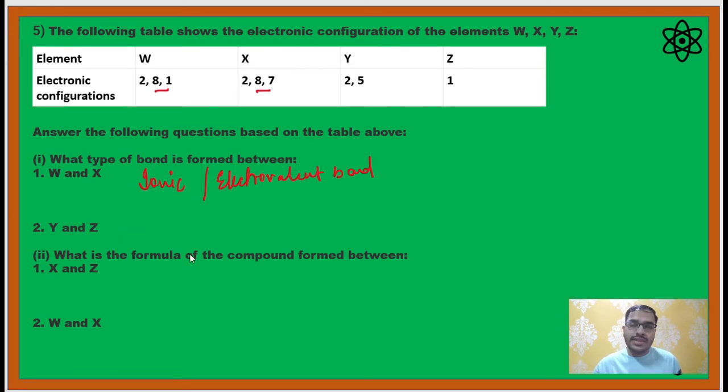Now between Y and Z. Between Y and Z we can say that 2,5 is the electronic configuration of Y and Z is 1. It is quite similar to the formation of ammonia. See, nitrogen has this electronic configuration and hydrogen has this, so you know that the bond which forms between them is of covalent nature. Please do mention whether it is polar or non-polar. Ammonia is a polar compound, so the bond will be polar because your Y is slightly more electronegative than Z. So there will be a charge separation.